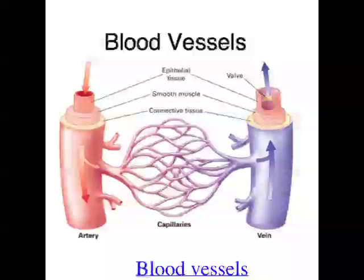When blood leaves the heart it ends up in an artery. Because blood is under really high pressure when it first leaves the heart, and arteries carry blood away from the heart, arteries have to be quite strong. The blood travels through the arteries to capillaries, which are really small blood vessels with a large surface area to volume ratio and really thin walls, so that materials can be exchanged really efficiently.